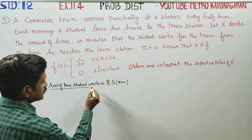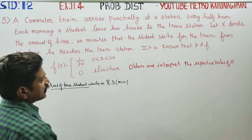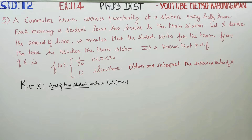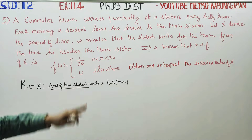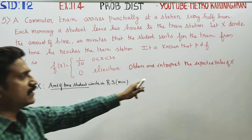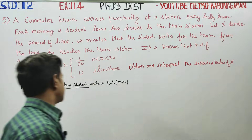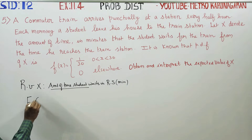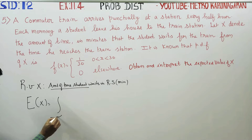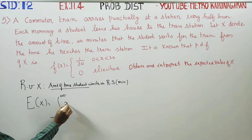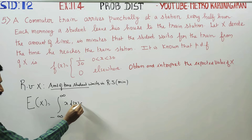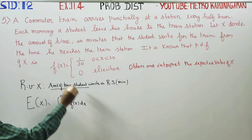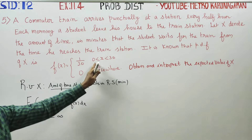It is known that the PDF is given. We need to obtain the expected value of X. The expectation of X uses the formula: integral from minus infinity to plus infinity of x·f(x) dx. This is a continuous random variable.